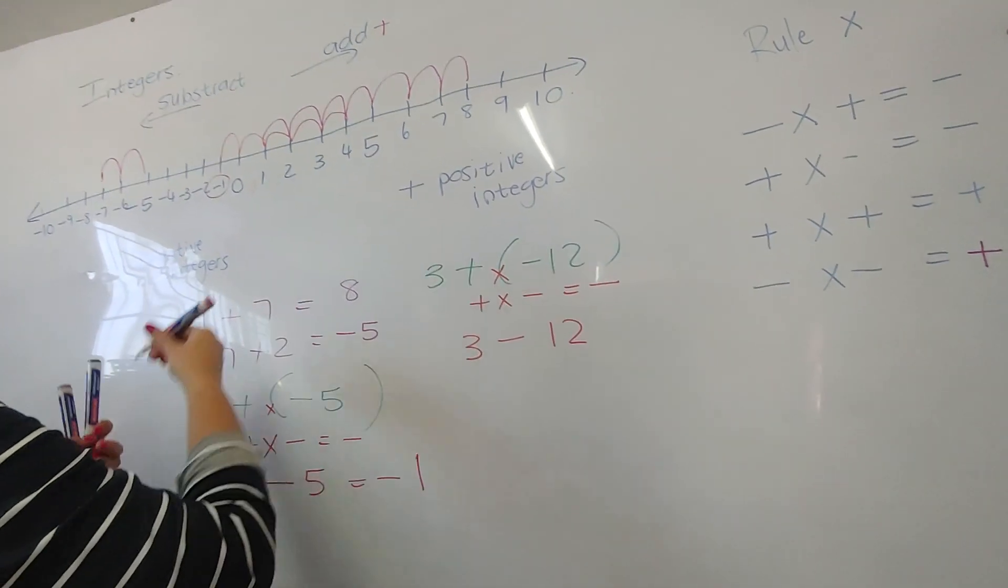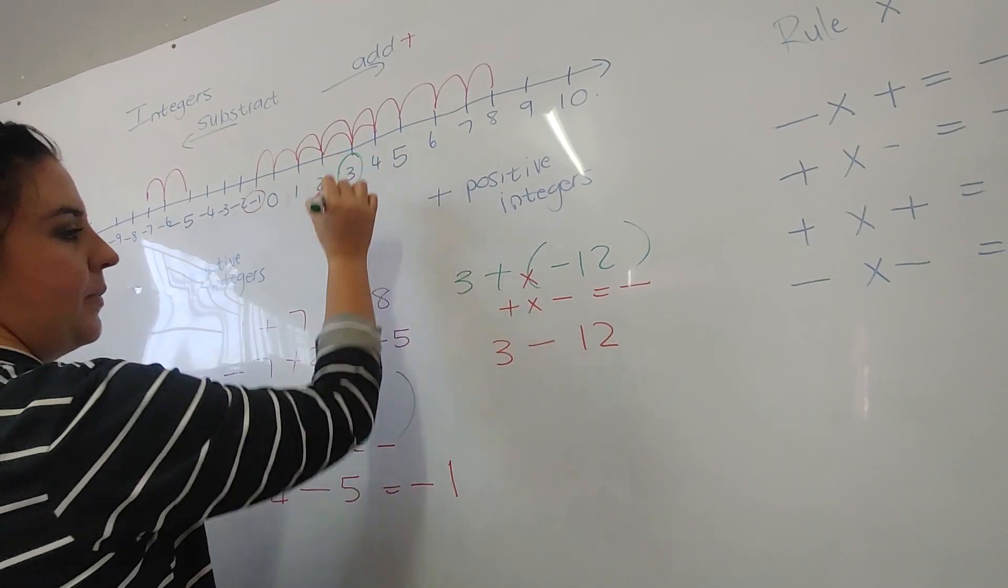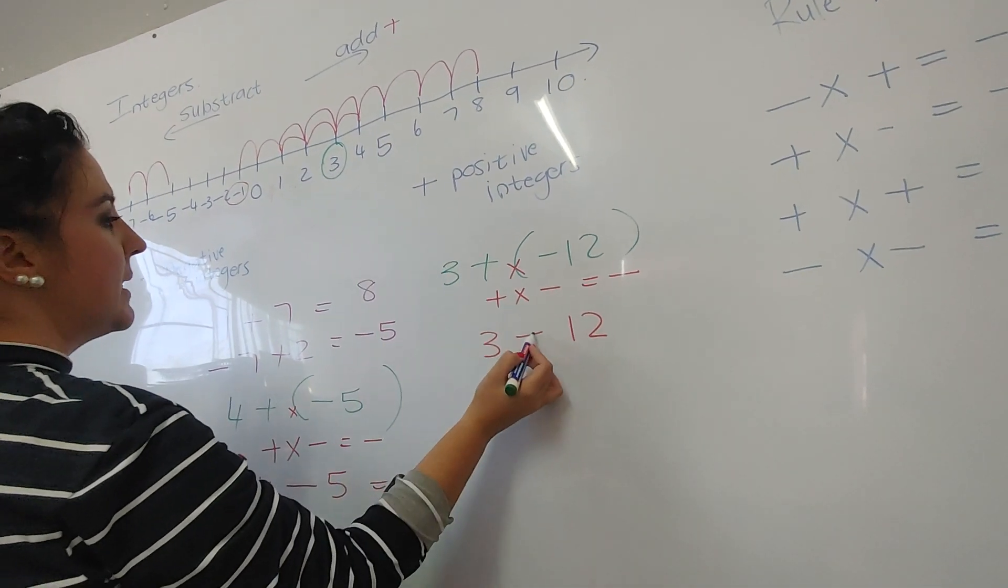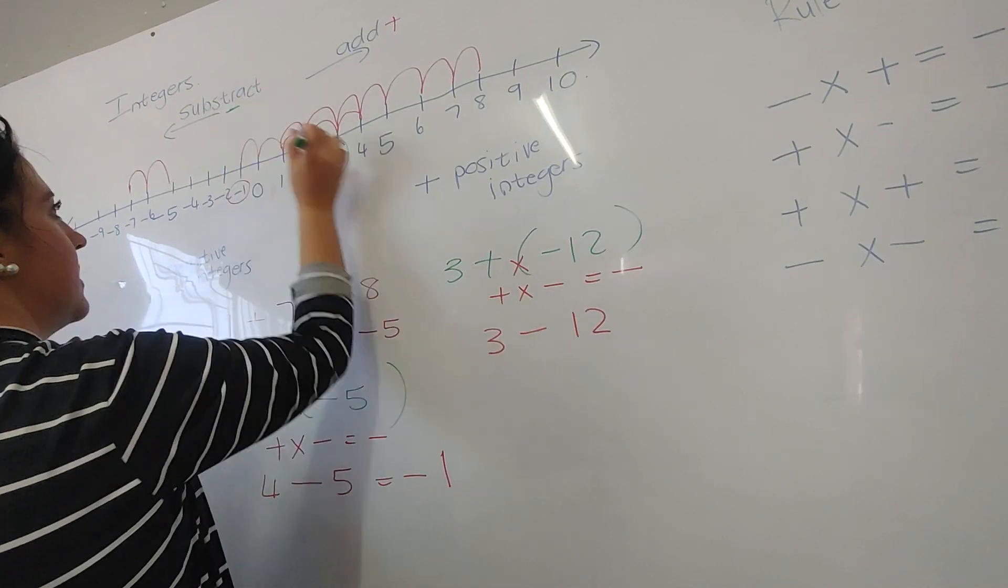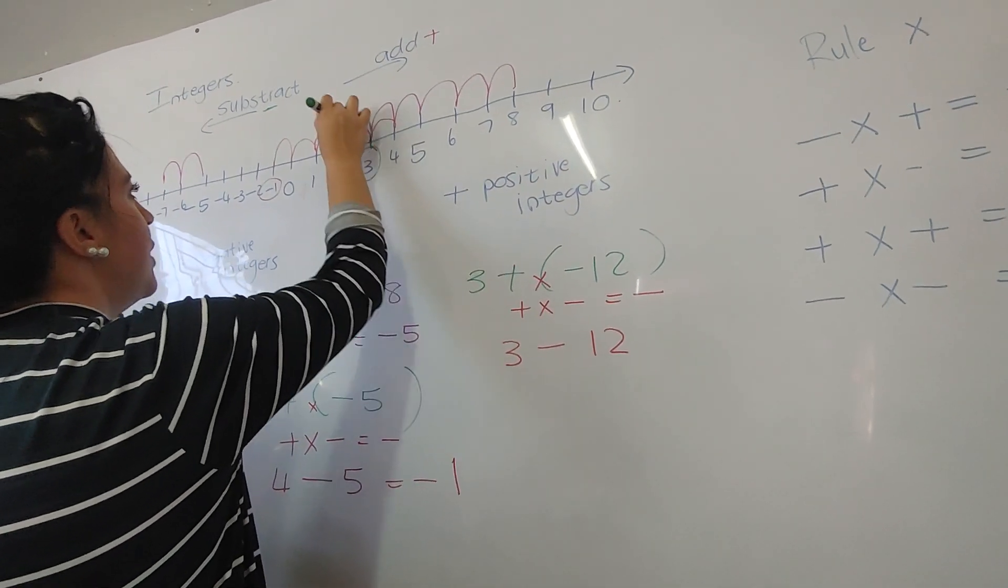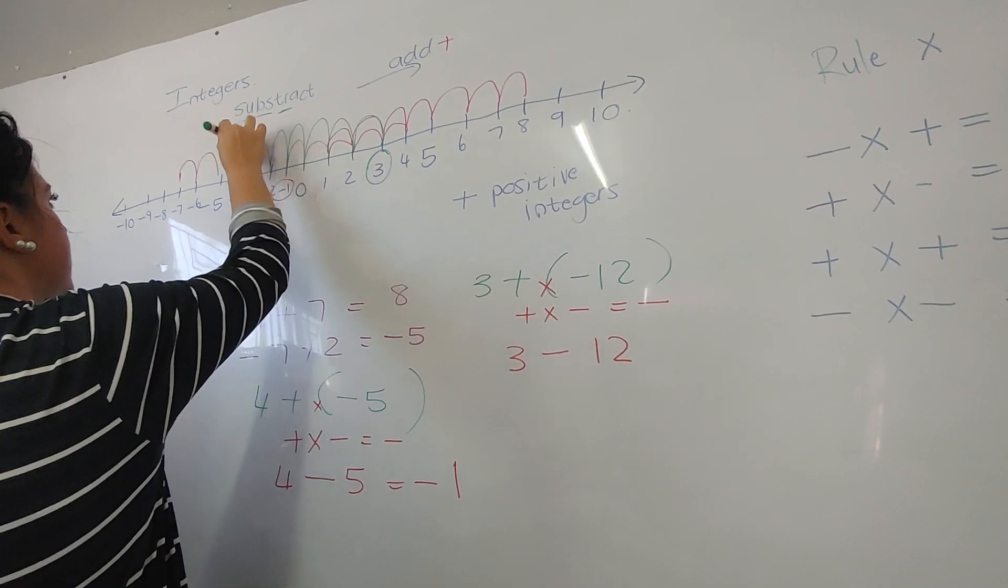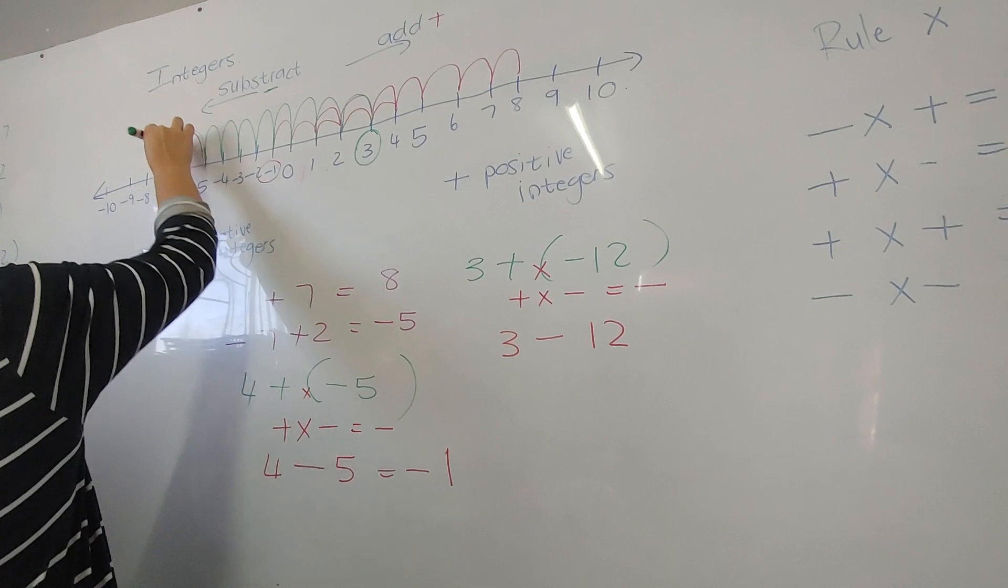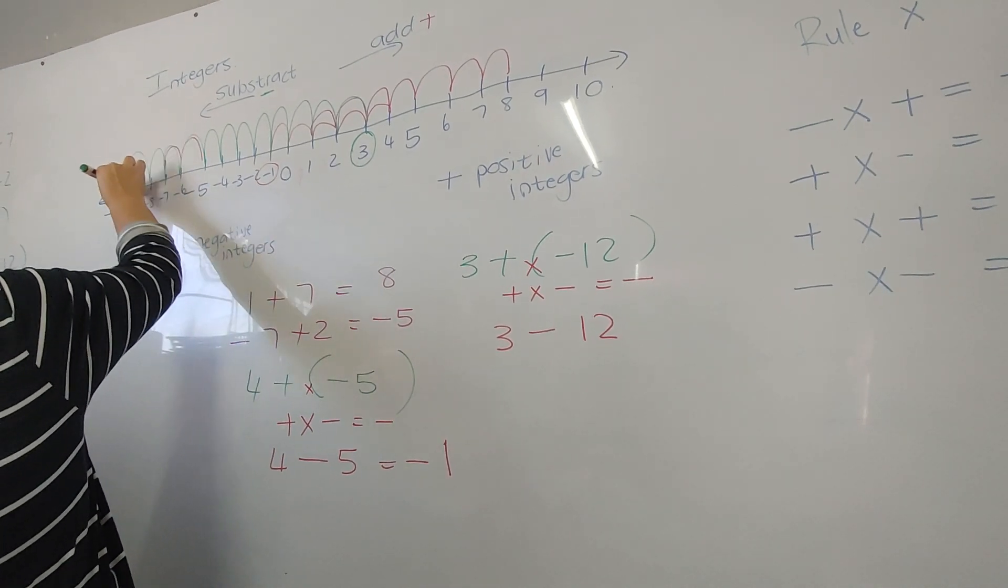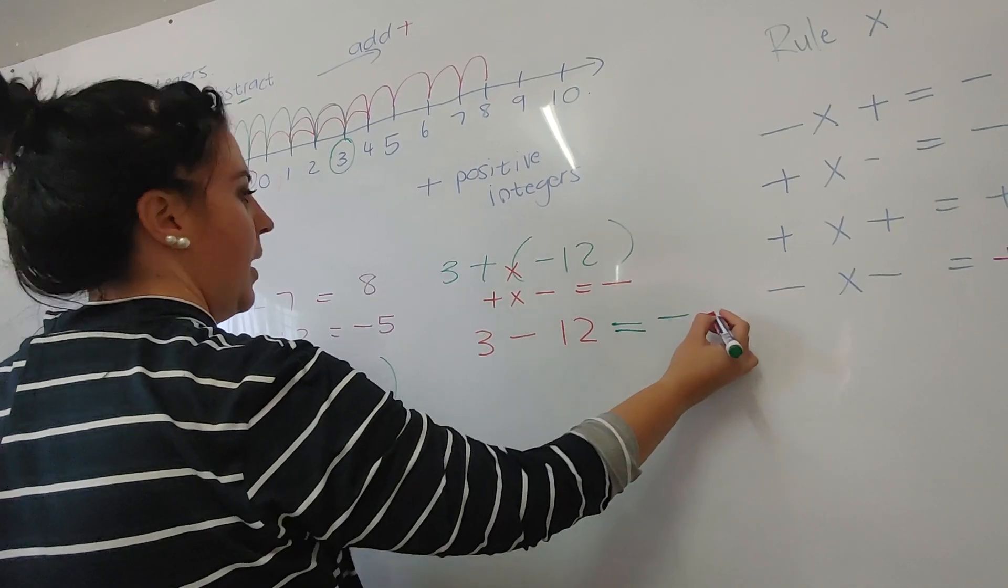Let's look at where the three is. We're going to use a different color here. Three minus - minus means to subtract. I'm going to go to the left side. We're going to minus 12: 1, 2, 3, 4, 5, 6, 7, 8, 9, 10, 11, 12. This is going to give you -9.